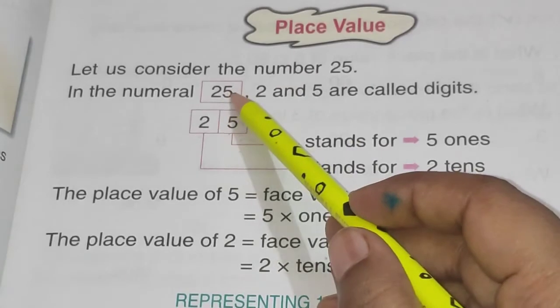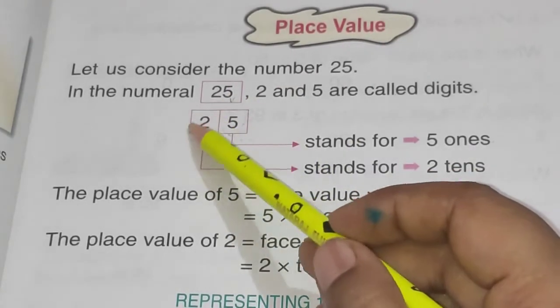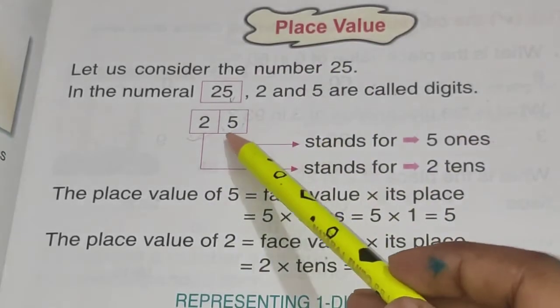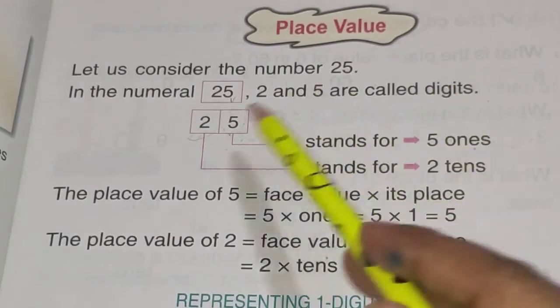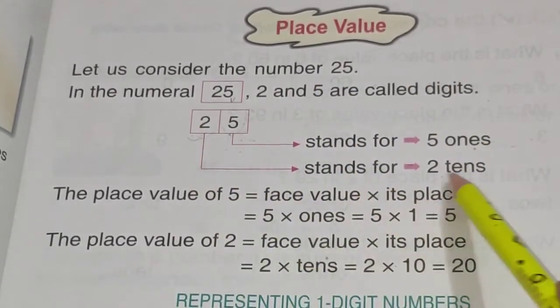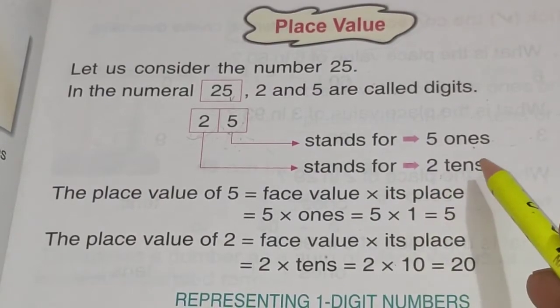According to the places, this is on ones place, 5 is on ones place and 2 is on tens place. Now 5 stands for 5 ones. Ones place pe hai. So 5 ones and 2 stands for 2 tens. So 2 ki value kya hoti hai? 2 tens.